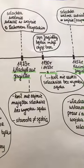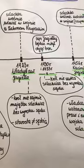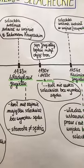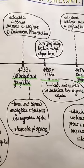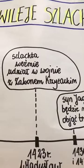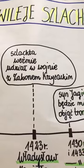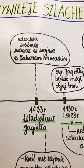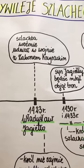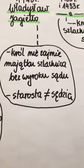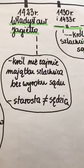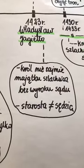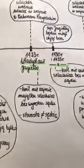Potem mamy Władysława Jagiełłę – znowu mamy władcę obcego, który zasiadł na tronie Polski. Jagiełło był mężem Jadwigi, pochodził z Litwy. Po to, aby szlachta wzięła udział w wojnie z zakonem krzyżackim, Jagiełło nadaje szlachcie przywileje: król nie zajmie majątku szlachcica bez prawomocnego wyroku sądu. Szlachta znowu otrzymuje kolejne prawo – nie można zabrać szlachcicowi ziemi bez sądu.